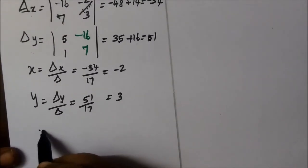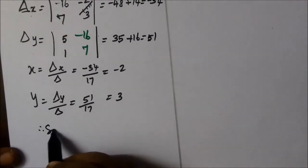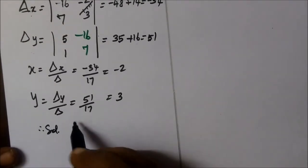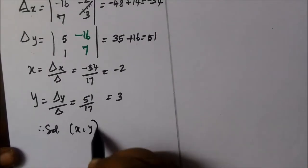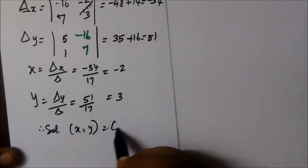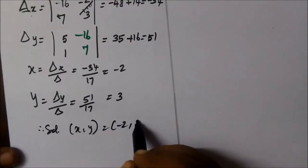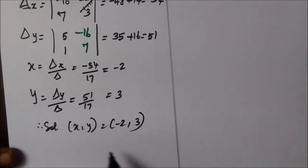Then, y equal to del y by delta, equal to 51 by 17, equal to 3. So, solution one. Therefore, solution: x, y equals minus 2, then 3.